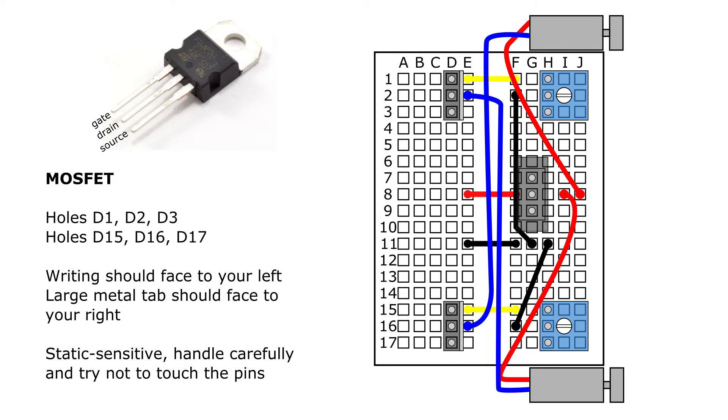And again, MOSFETs have three different pins called the gate, the drain, and the source that all serve different functions, so it's important not to put this part in backwards or your circuit won't work properly. So make sure that again, when you're holding the robot as oriented in the diagram here, that the writing is facing to the left and the large metal tab is facing to the right.